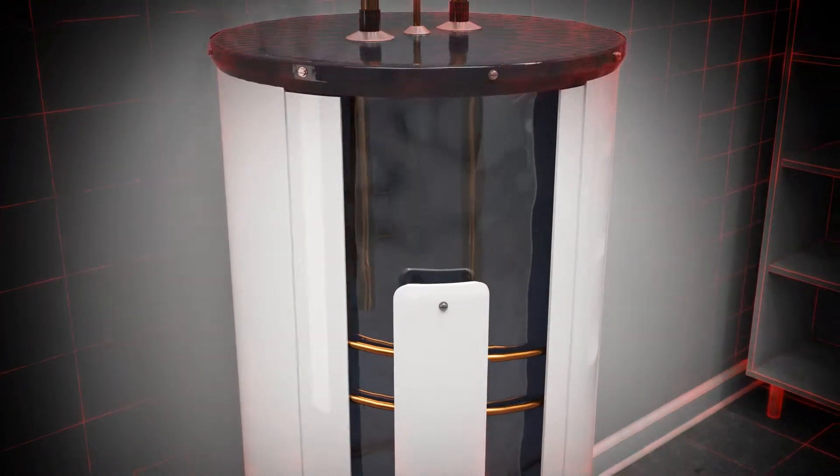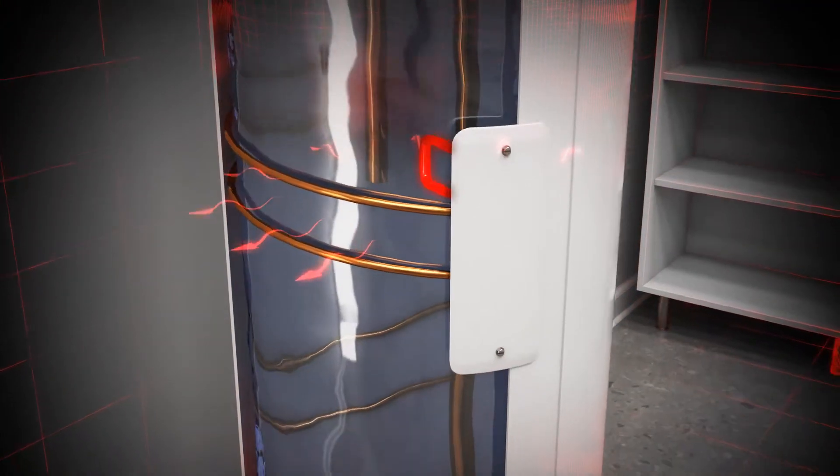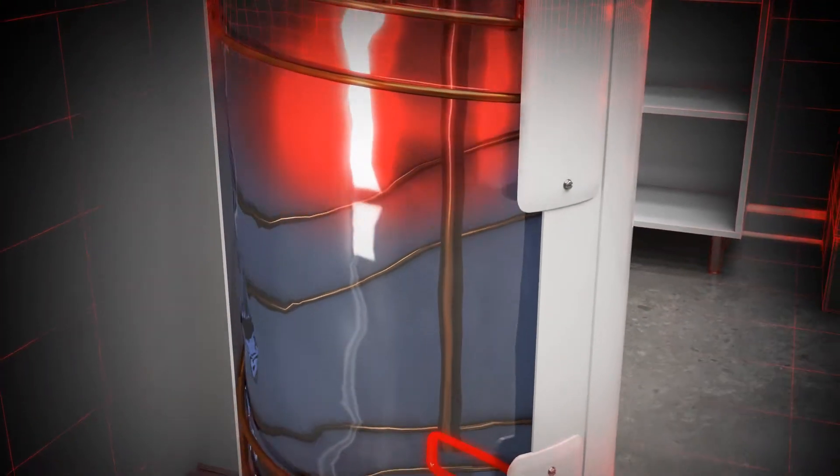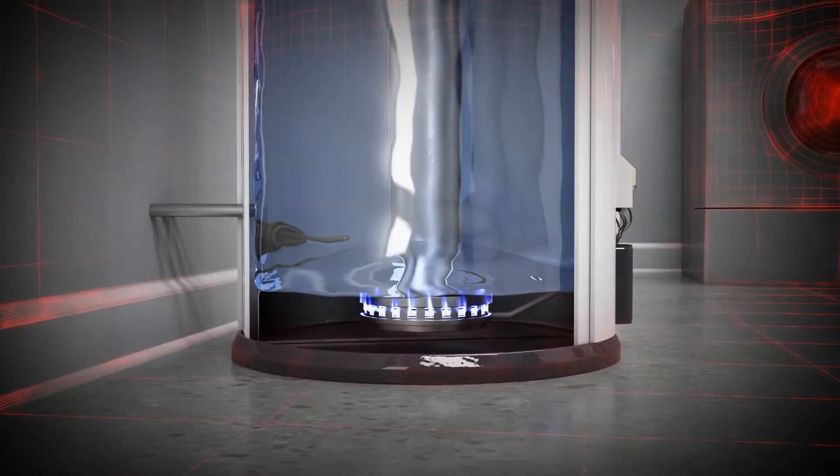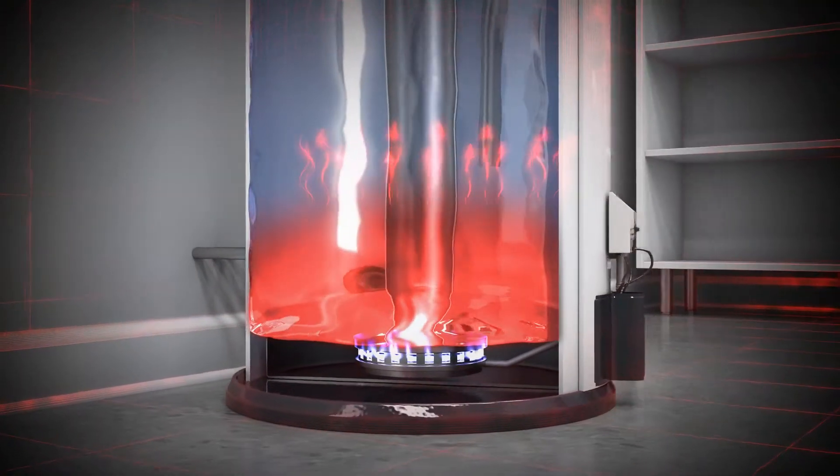Standard electric water heaters use a resistive element to turn electricity directly into heat, which is transferred directly to the water. Gas water heaters use natural gas or propane to ignite a burner centered under the bottom of the tank to create heat.